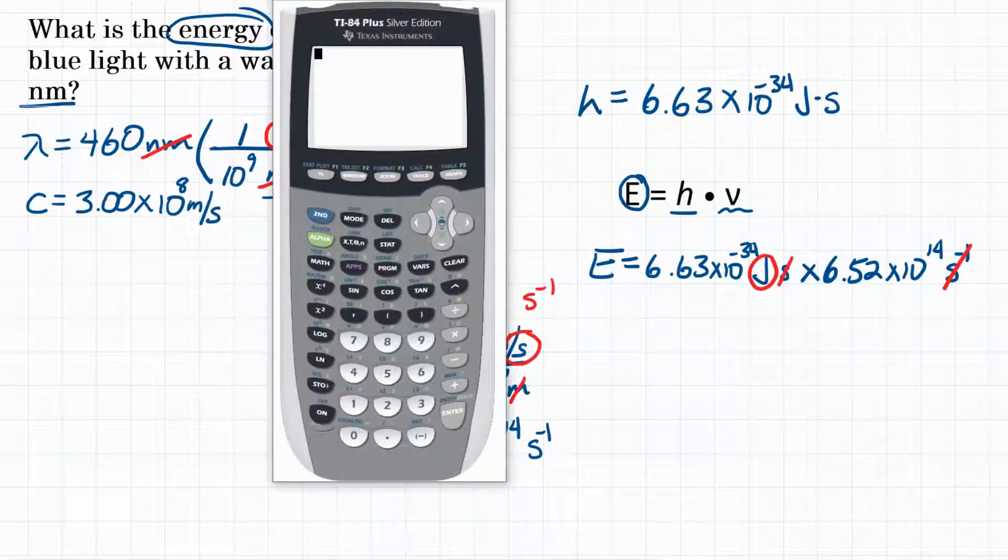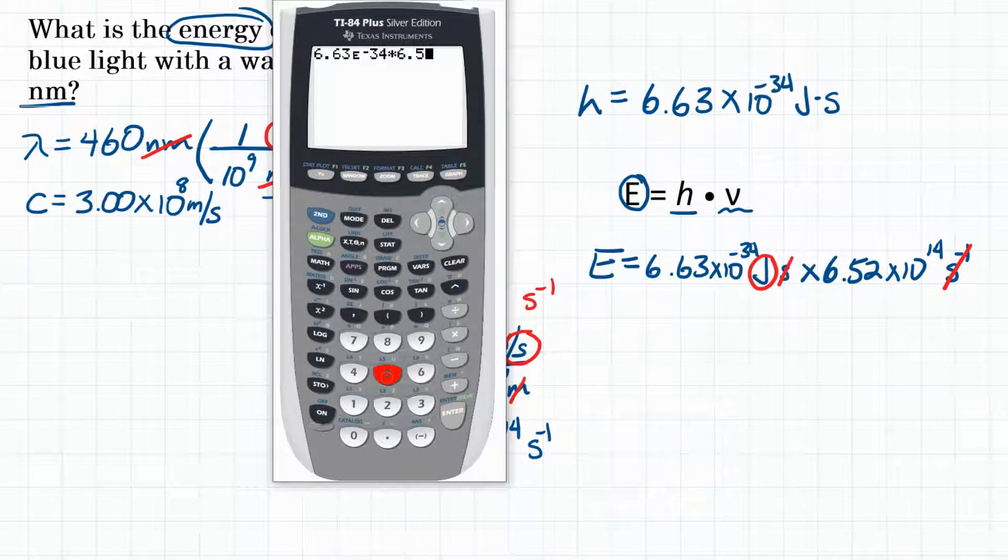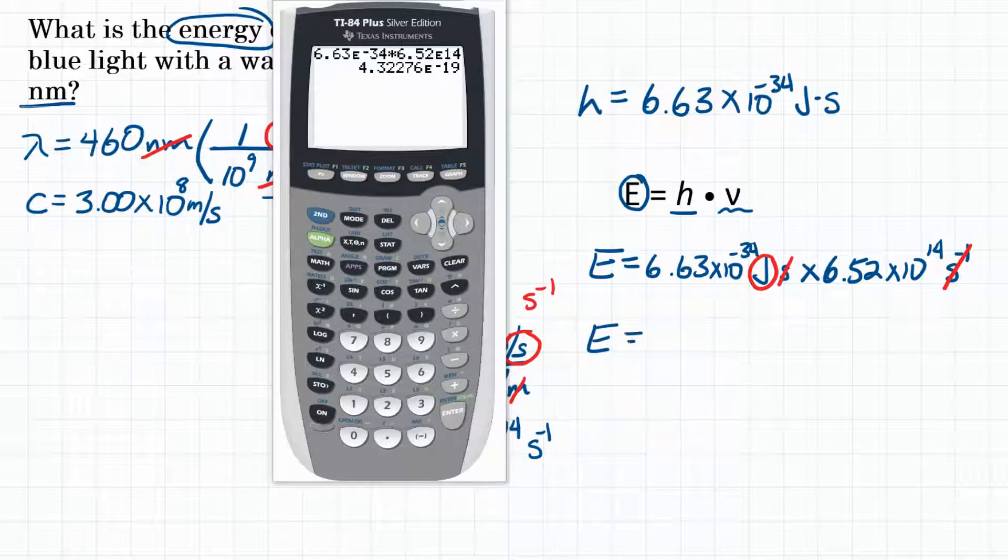Let's plug this in our calculator. You're going to punch in 6.63 EE, which means times 10 to the negative 34th, times 6.52 times 10 to the 14th. Hit equals, and your calculator says 4.32276 times 10 to the negative 19th. Let's round to three significant figures, and we get that E energy is equal to 4.32 times 10 to the negative 19th. Units are joules.